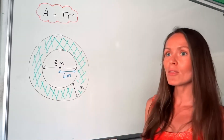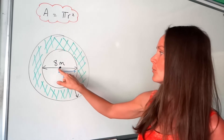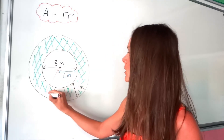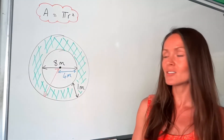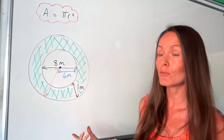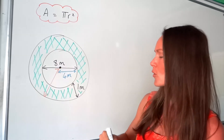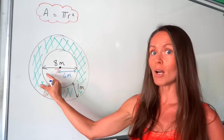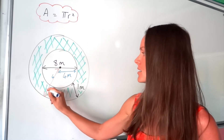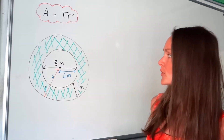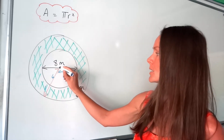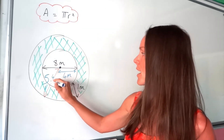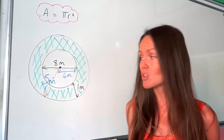Now for the big circle. The radius is the distance from the centre to the circumference. We know the radius of the smaller circle is 4 m. And this additional distance — the width of the ring — is always 1 m. So the radius of the larger circle, from the middle to the circumference, must be 4 plus 1 m, which is 5.